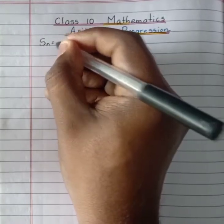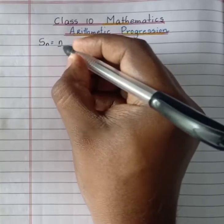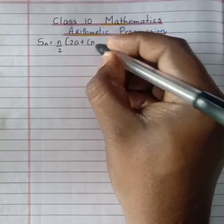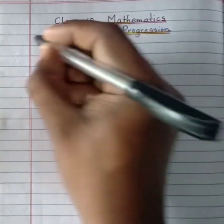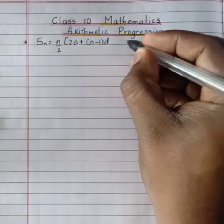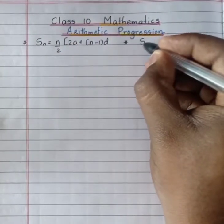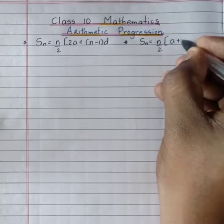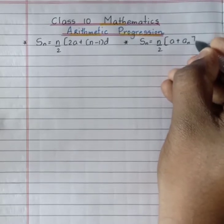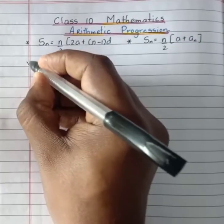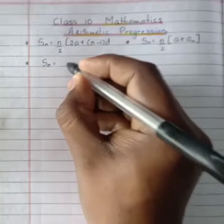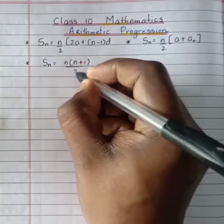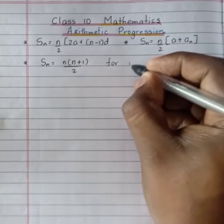The sum of n terms of the given AP is given by the formula Sn equals n divided by 2 into 2a plus n minus 1 into d. Another form of the Sn formula is Sn equals n divided by 2 into a plus an, where an is the nth term.